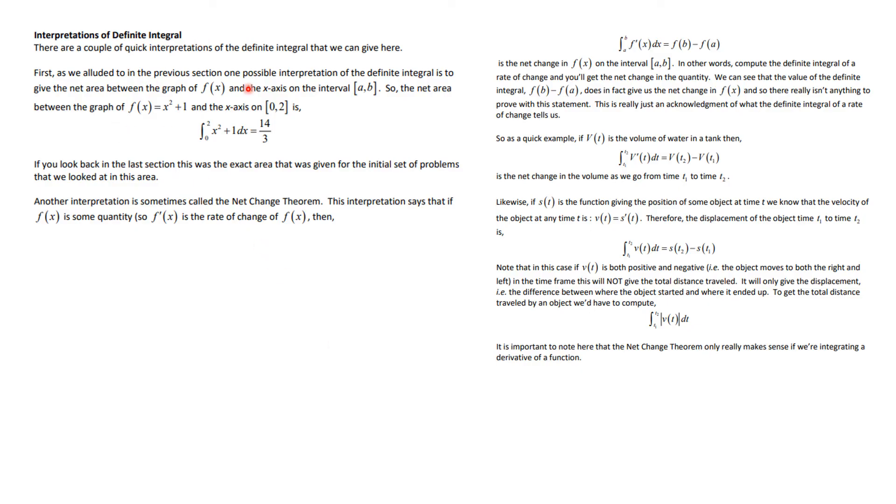So we're going to talk about a couple of interpretations of the definite integral. First of all, the definite integral is the net area between the two endpoints. You take the positives and the negatives, so it's the net area. Another interpretation in your book, they call this the net change theorem. This interpretation says if f(x) is some quantity, and that means f'(x) is the rate of change of f(x), that goes back to your derivative concept. Then the integral from a to b of f'(x)dx is f(b) minus f(a). This is the net change in f(x) on the interval a to b.